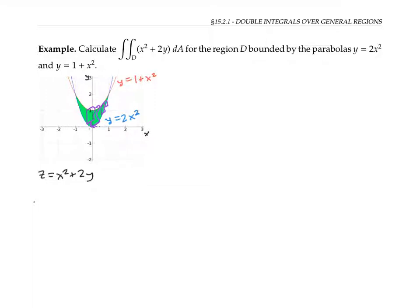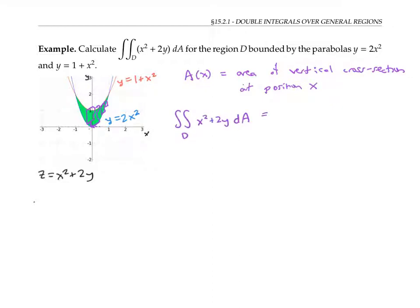The vertical cross sections correspond to different values of x along the x axis. So I can write A(x) to represent the area of the vertical cross section at position x. Then the total volume, or double integral, can be written as the integral of these cross sectional areas integrated with respect to x, from x equaling the minimum x value — which looks like negative one — to the maximum x value, which looks like one.